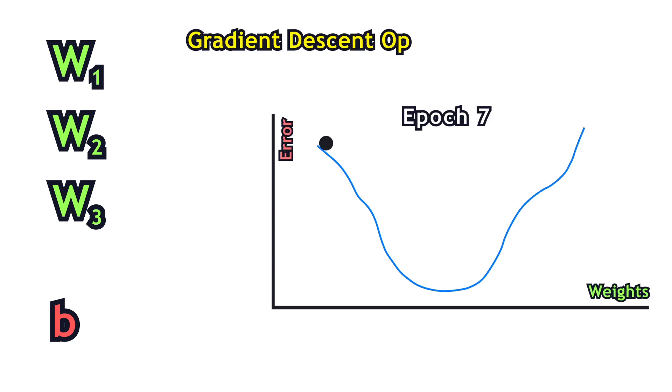In practice, the weights and the bias are estimated using a gradient descent optimization algorithm.